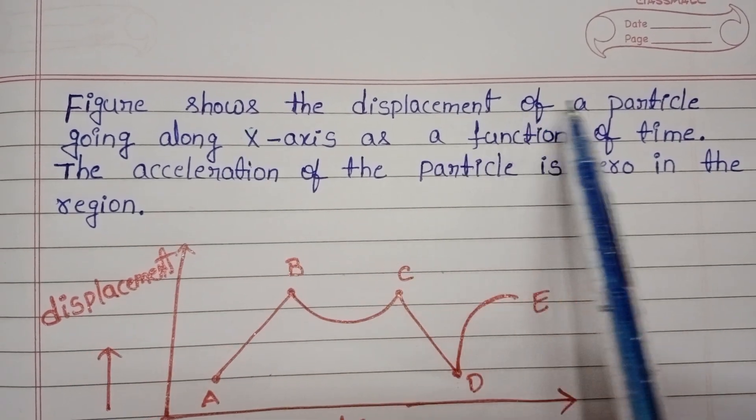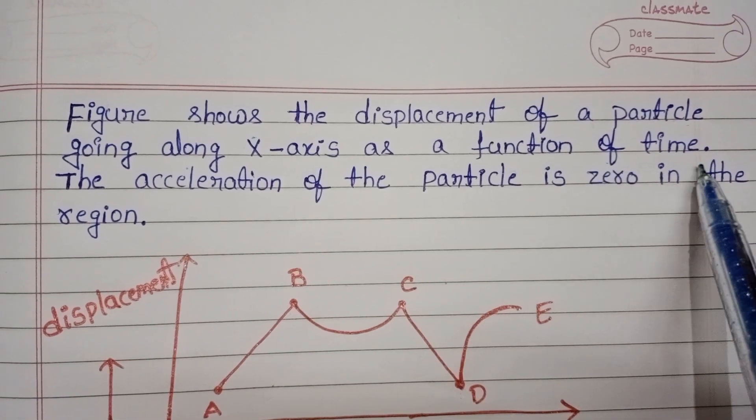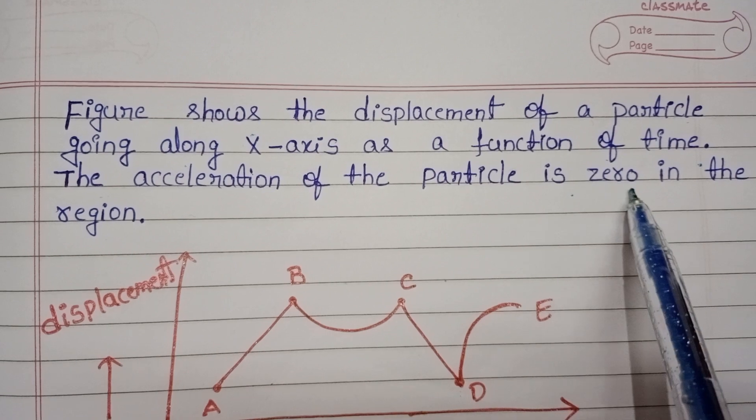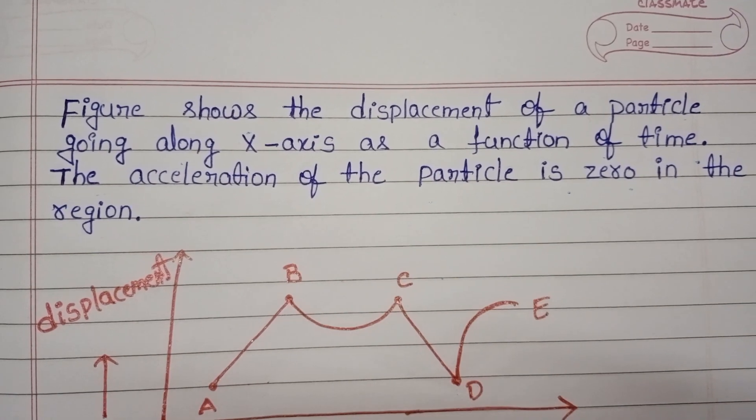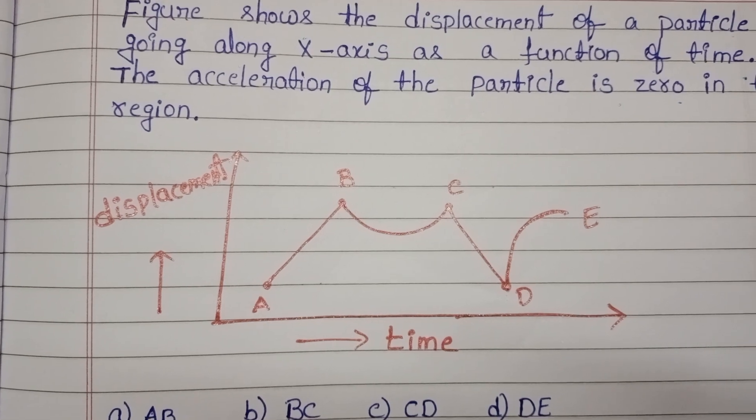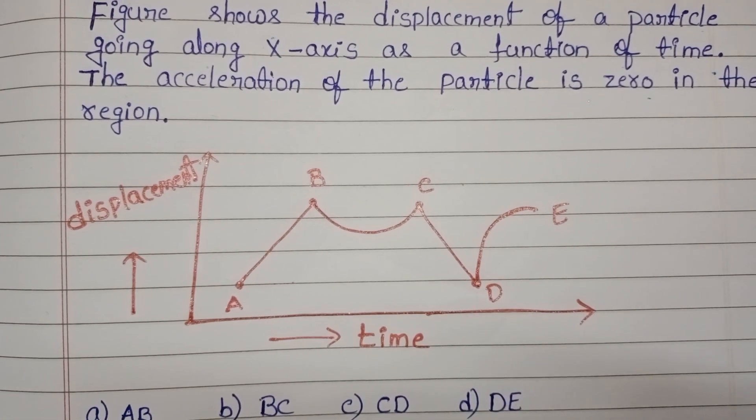Figure shows the displacement of a particle going along x-axis as a function of time. The acceleration of the particle is zero in the region. Here the given graph is a displacement-time graph. We know the slope of the displacement-time graph gives velocity.